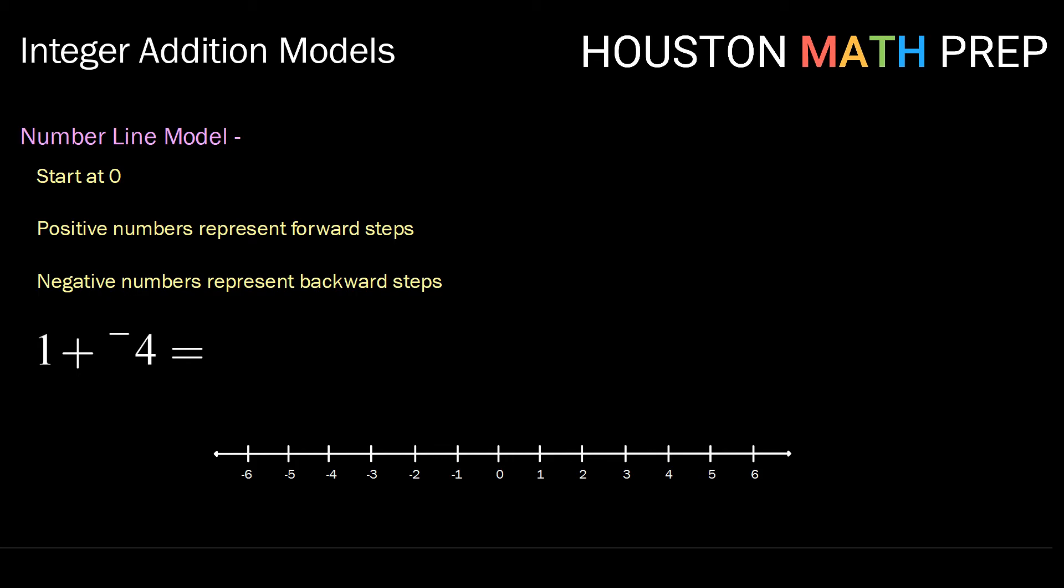So let's model one plus negative four. So if we get our little guy there starting at zero, one means we're going to take one forward step.